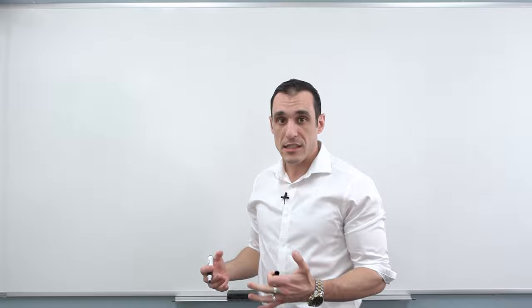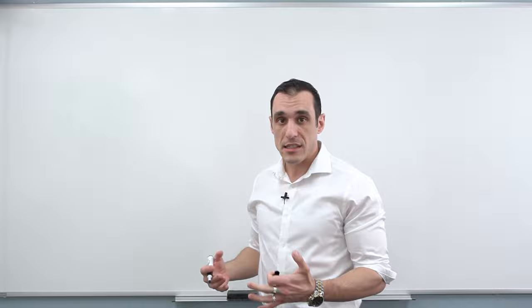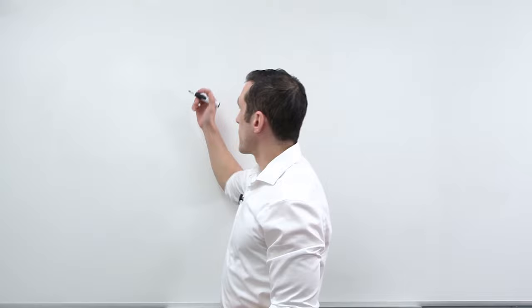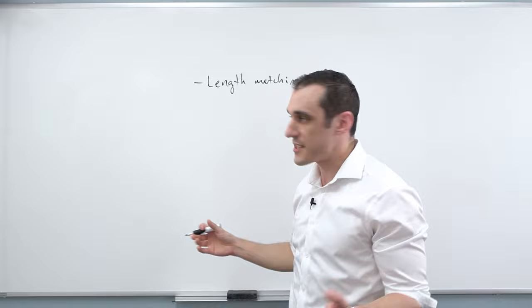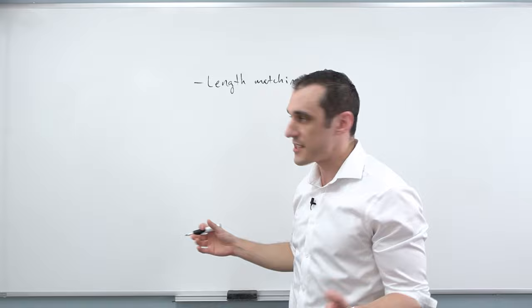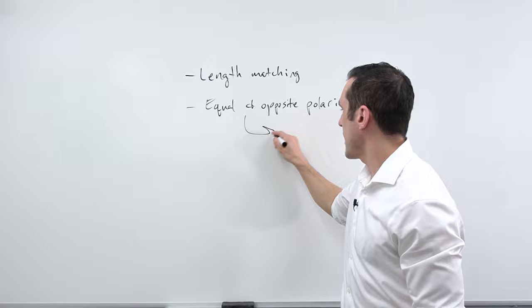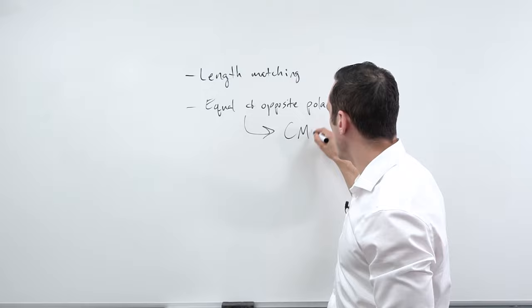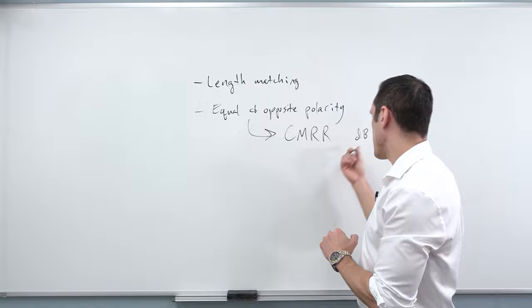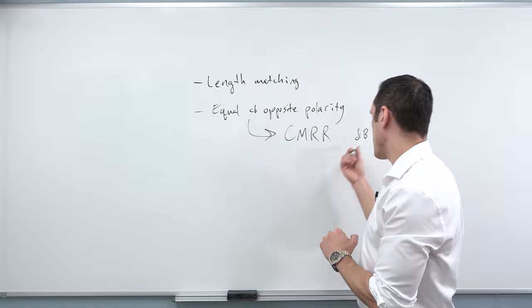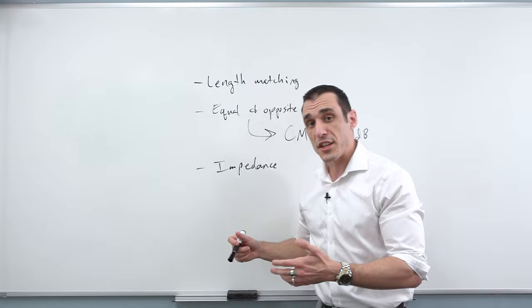When we originally were talking about differential pairs, there are a few fundamental concepts to think about when routing them and working with differential signals. Previously, we talked about things like length matching — keeping each side of the pair at a consistent length. We also talked about equal and opposite polarity of the two signals, which gives us some noise cancellation. This is specified in the datasheet as the common mode reduction ratio, or CMRR, usually specified in dB. A good differential receiver will have a pretty high value for CMRR. The other thing we talked about was impedance.